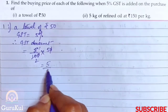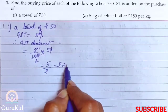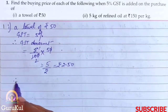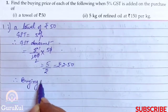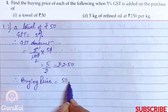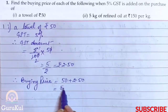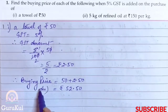Calculating 5% of ₹50.50 gives us ₹2.50. This is the GST amount. Therefore the buying price of the towel is ₹50.50 + ₹2.50 = ₹52.50. This is the answer for the first part of Question 1.